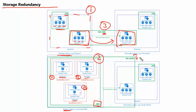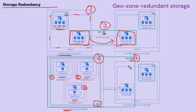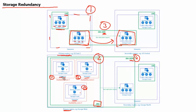The fourth redundancy option is GZRS, geo-zone-redundant storage. GZRS copies data synchronously across three Azure availability zones in the primary region using ZRS. Then it copies the data asynchronously to a single physical location in the secondary region. Within the secondary region, data copies synchronously three times using LRS.